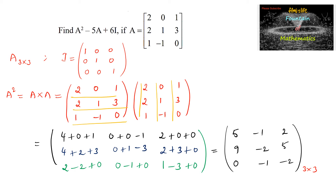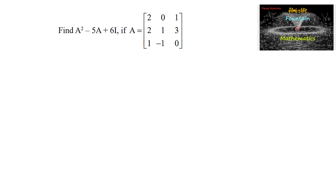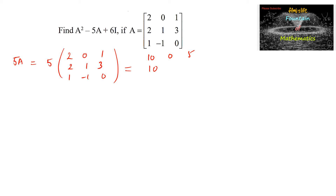Now, 5 times A equals 5 times [2,0,1; 2,1,3; 1,−1,0]. Since 5 is multiplied to each and every element of the matrix, we get 5A = [10, 0, 5; 10, 5, 15; 5, −5, 0].